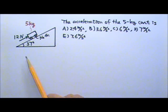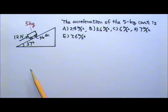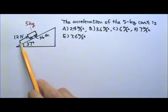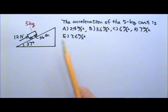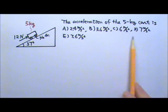In this question we have a frictionless cart on a 37 degree incline. The cart is 5 kg and there's a 12 N force pushing on the cart along the incline. And we're looking for the acceleration of the 5 kg cart.